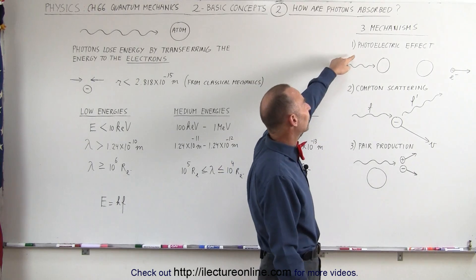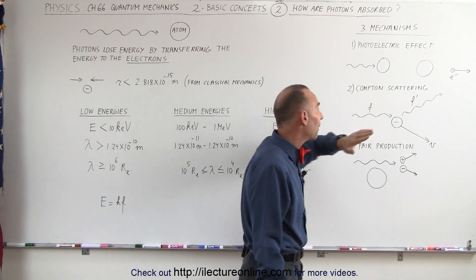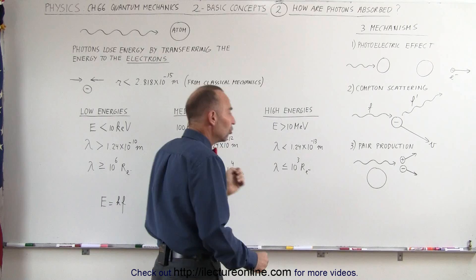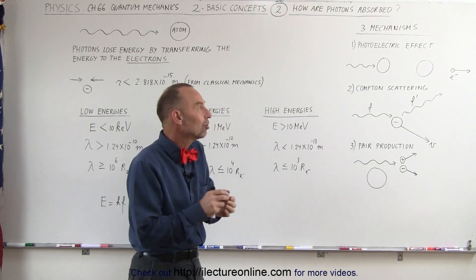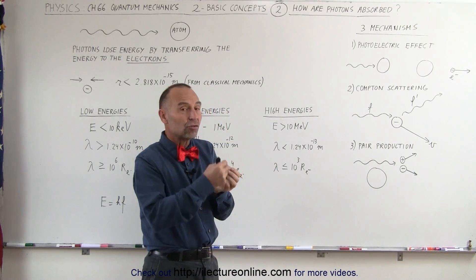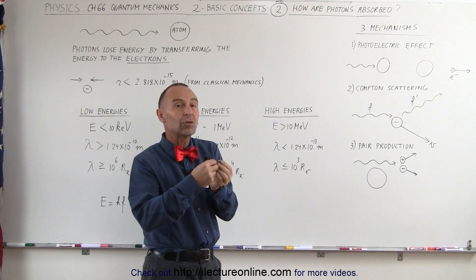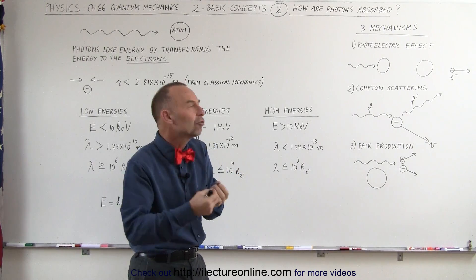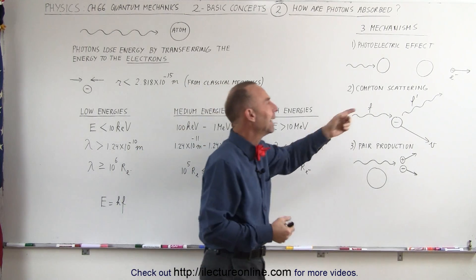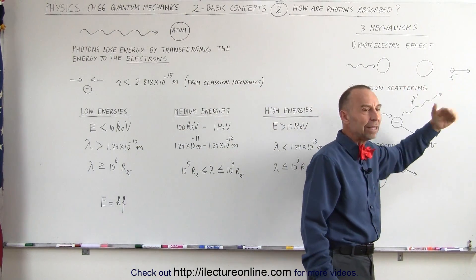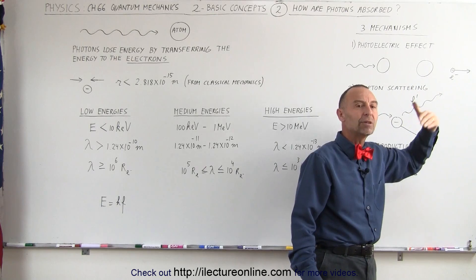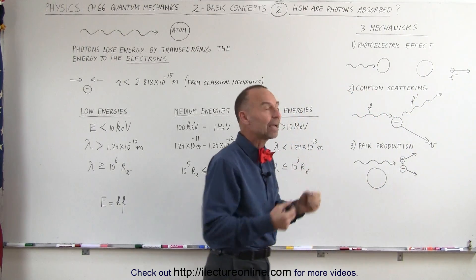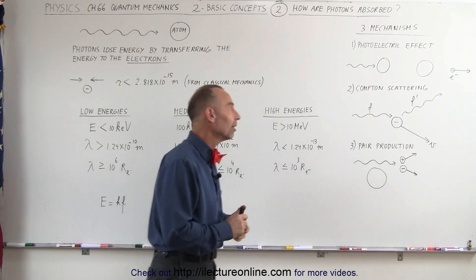First, we have the photoelectric effect, which happens at low energies. When photons have low energies, the energy transfer tends to go entirely to the electron. The electron typically absorbs all of the energy of the photon and then zips off, either moving to a different energy level or being completely ionized from the atom itself.